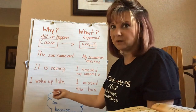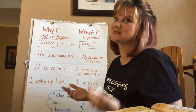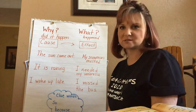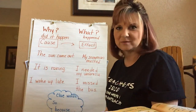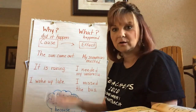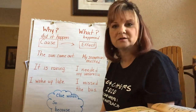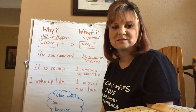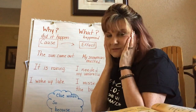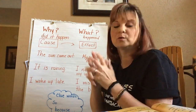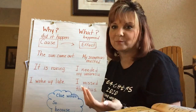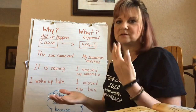Same with this one: it's raining outside, so because it was raining outside, I needed my umbrella. They kind of go together like a little puzzle — what happened and why did it happen? It was raining, so I needed my umbrella. You see how that goes together? Cause and effect: why it happened and what happened. I woke up late, so I missed the school bus. Cause and effect.